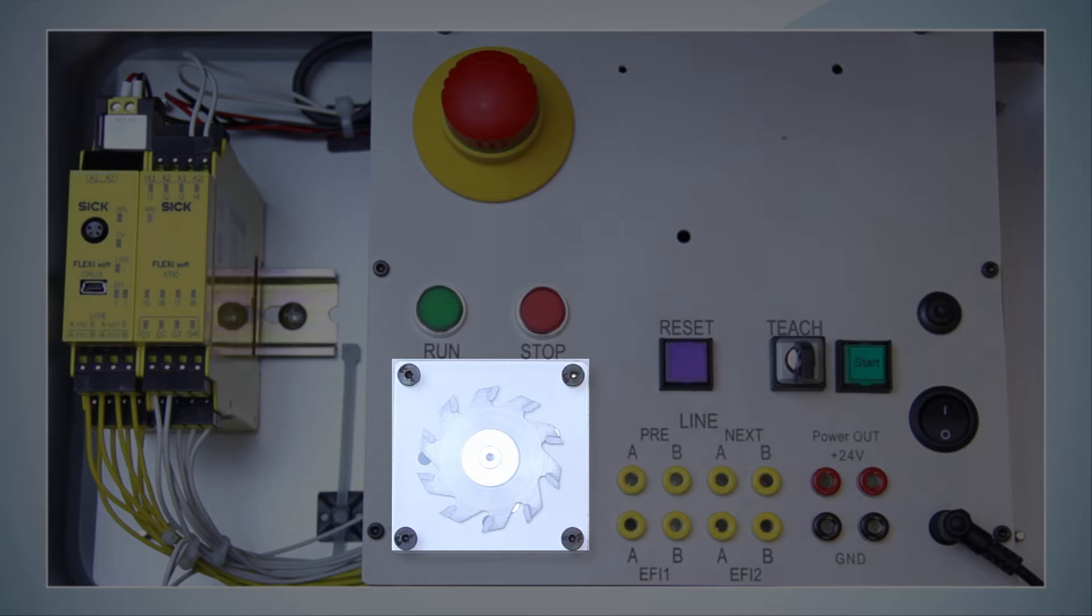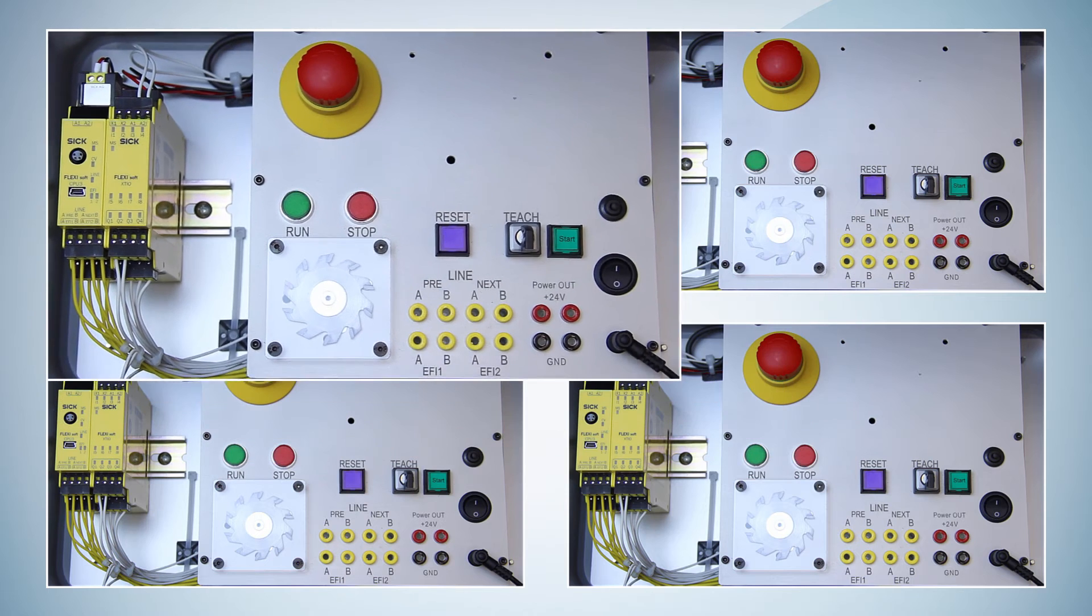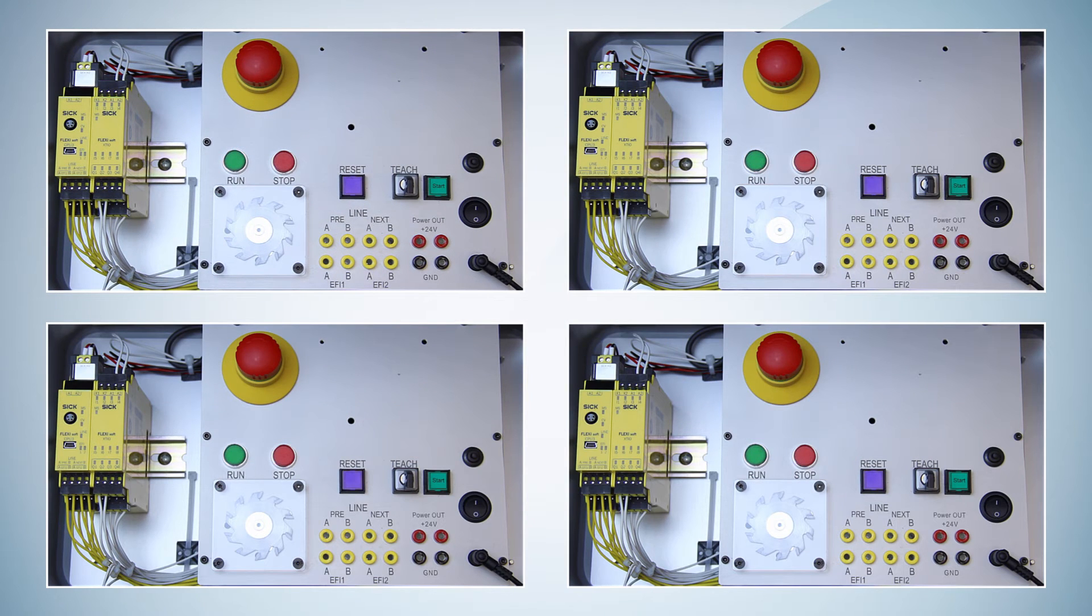To visualize the hazardous machine movement we have this little saw. In order to distinguish the demo cases I will give them the numbers 1, 2, 3, and 4.